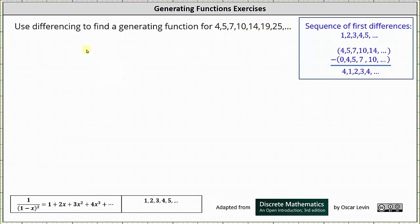The technique of differencing is useful when the first differences of a sequence produces a sequence in which we know the generating function for. In this case, the sequence of first differences is 5 minus 4, which is 1, 7 minus 5, which is 2, 10 minus 7, which is 3, 14 minus 10, which is 4, and so on.